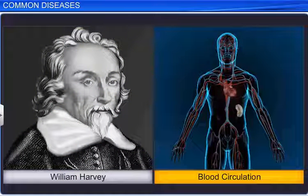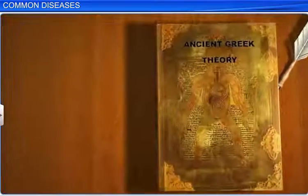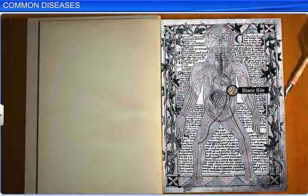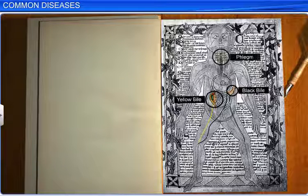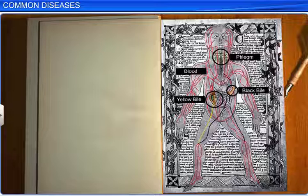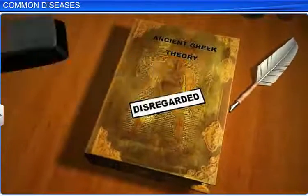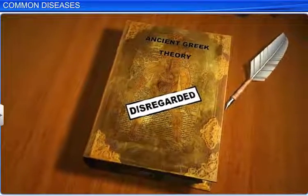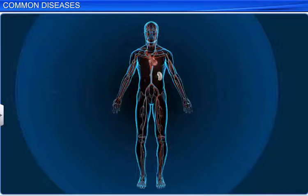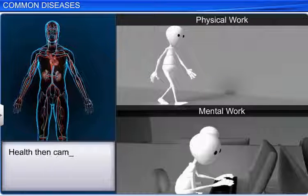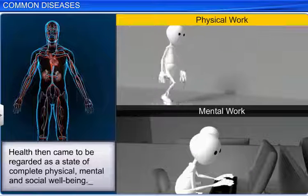Long before William Harvey discovered blood circulation, it was believed that good health was a result of the balance of certain humors like black bile, yellow bile, phlegm, and blood inside the body. Persons with black bile were supposed to have a hot personality and fevers. This hypothesis had to be disregarded when it was realized that even people with black bile and blood circulating inside their body had normal body temperature. Health then came to be regarded as a state of complete physical, mental, and social well-being.